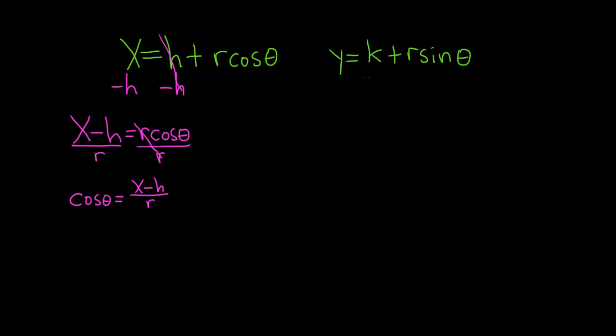Over here, we do the same thing. We solve for the sine of theta. So we subtract k from both sides. That leaves us with y minus k equals r sine of theta. And then to finish solving for the sine function, we simply divide by r. That leaves us with the sine of theta is equal to y minus k all divided by r.